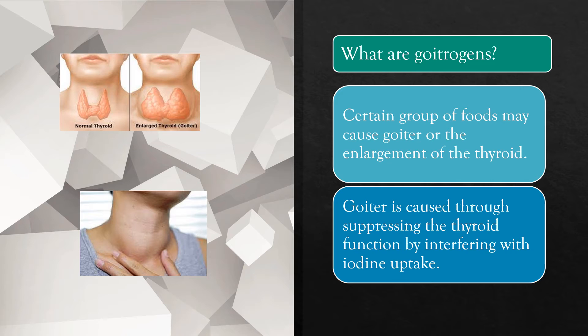Goitrogens cause goiter, which is an enlargement of the thyroid gland. Goiter is caused by suppressing thyroid function through interfering with iodine uptake. These are a certain group of foods which may cause enlargement of the thyroid gland.